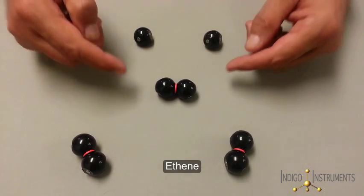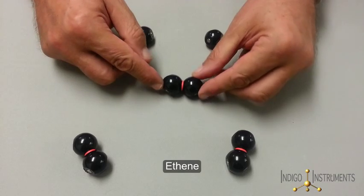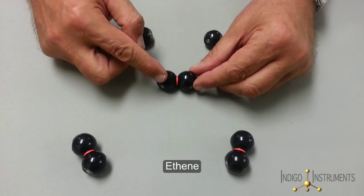We start with an ethene molecule which is comprised of four magnets in place of bonds and a non-rotatable double bond.